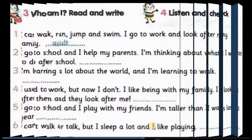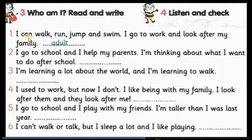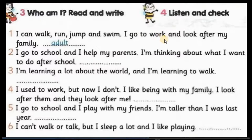Now look at page five. Number one: 'I can walk, run, jump, and swim. I go to work and look after my family.' This person goes to work and has a family — look after means يرعى. So this is not a child; this is an adult, like your father or your mother.